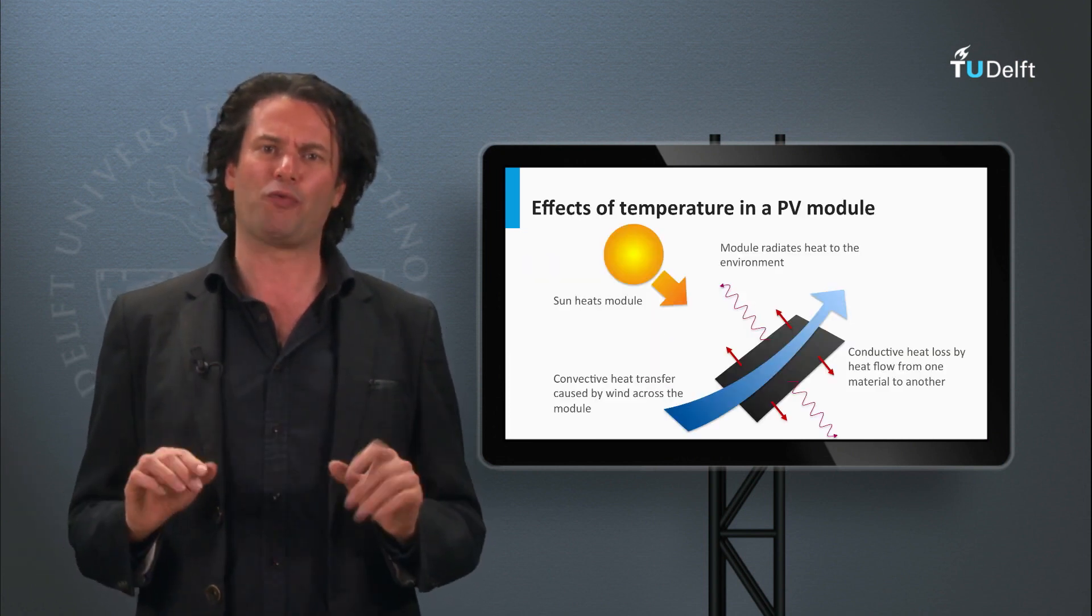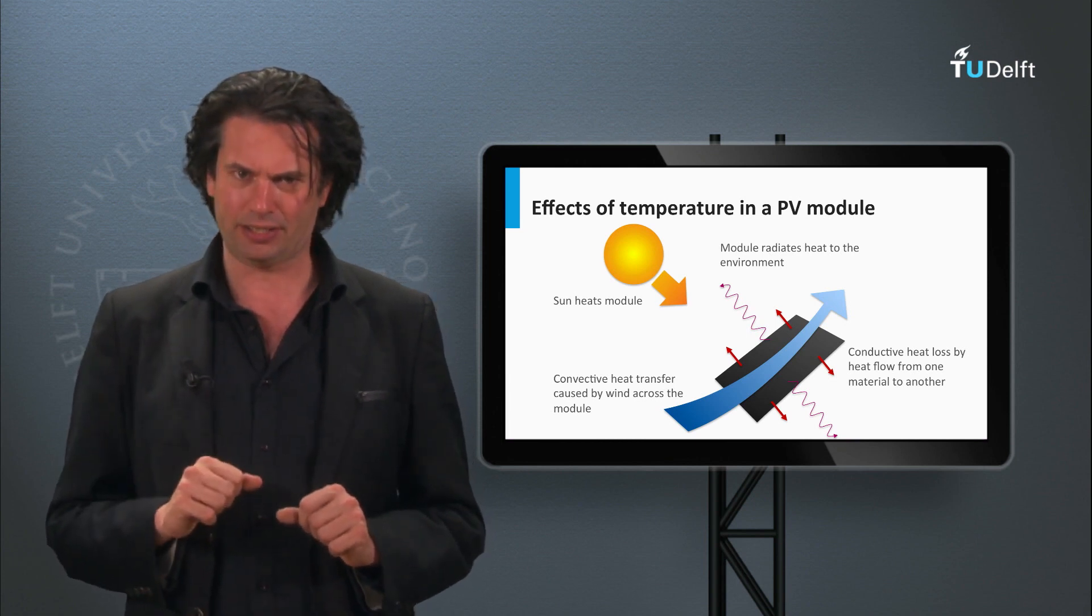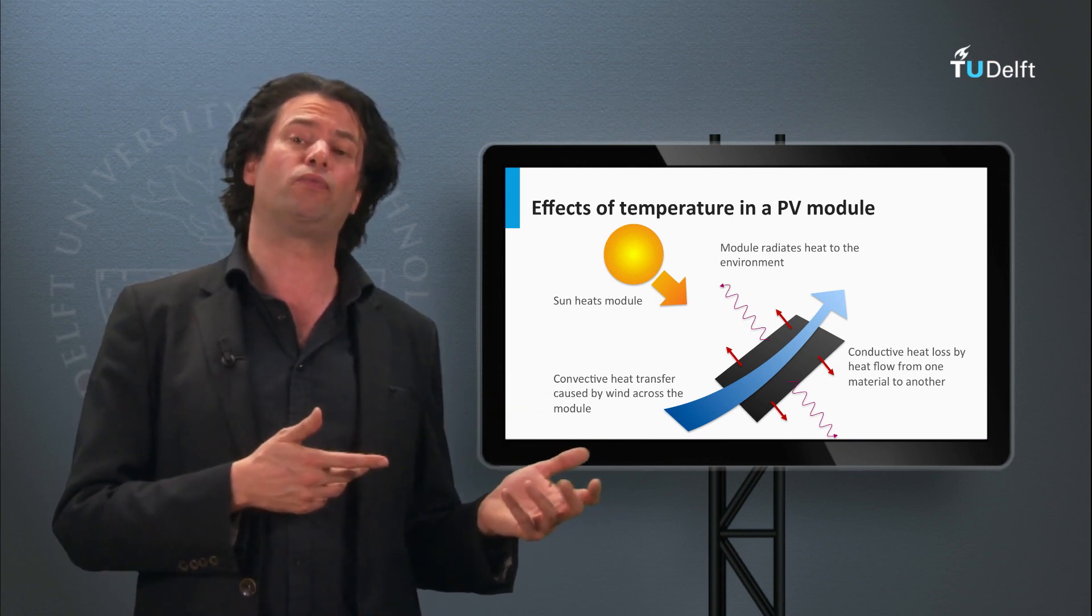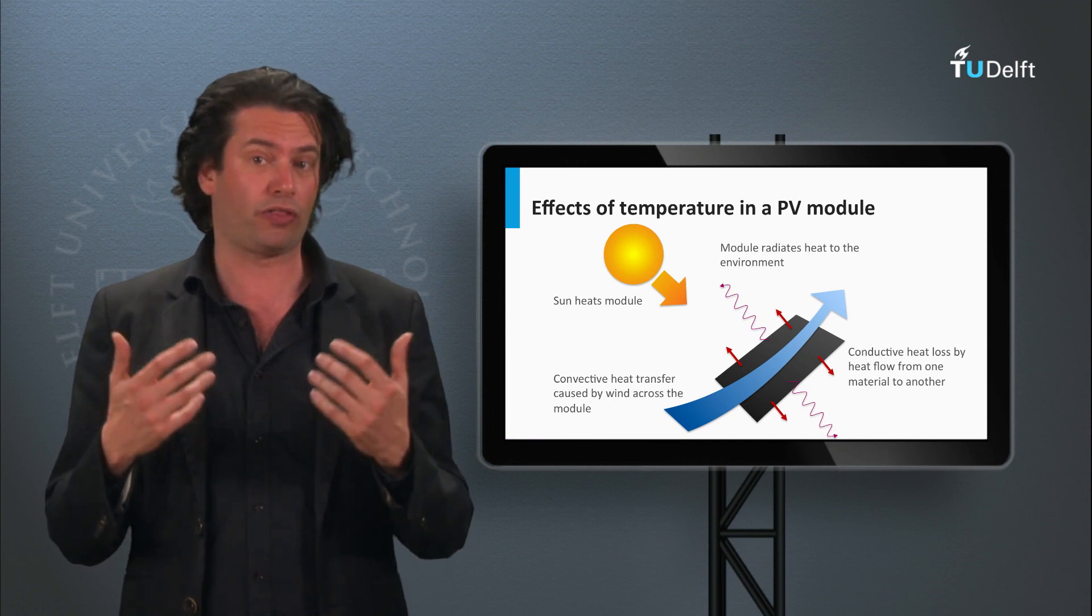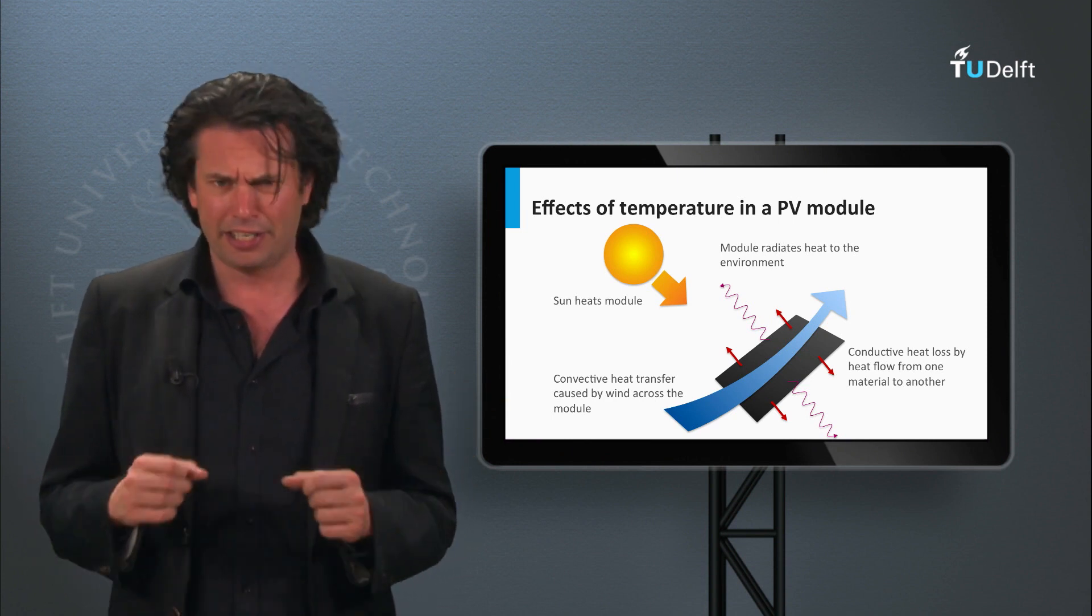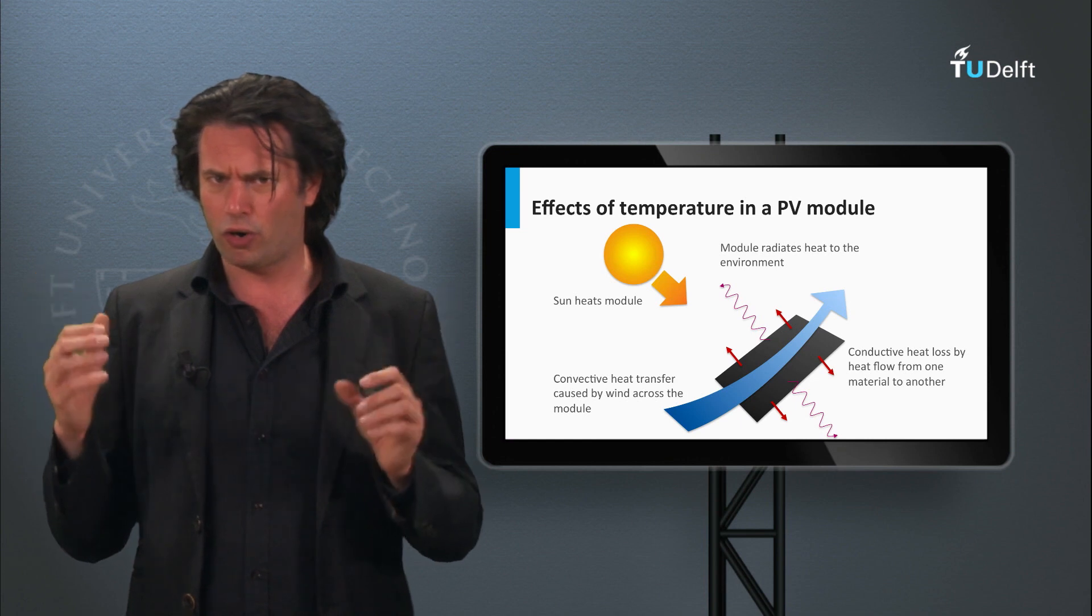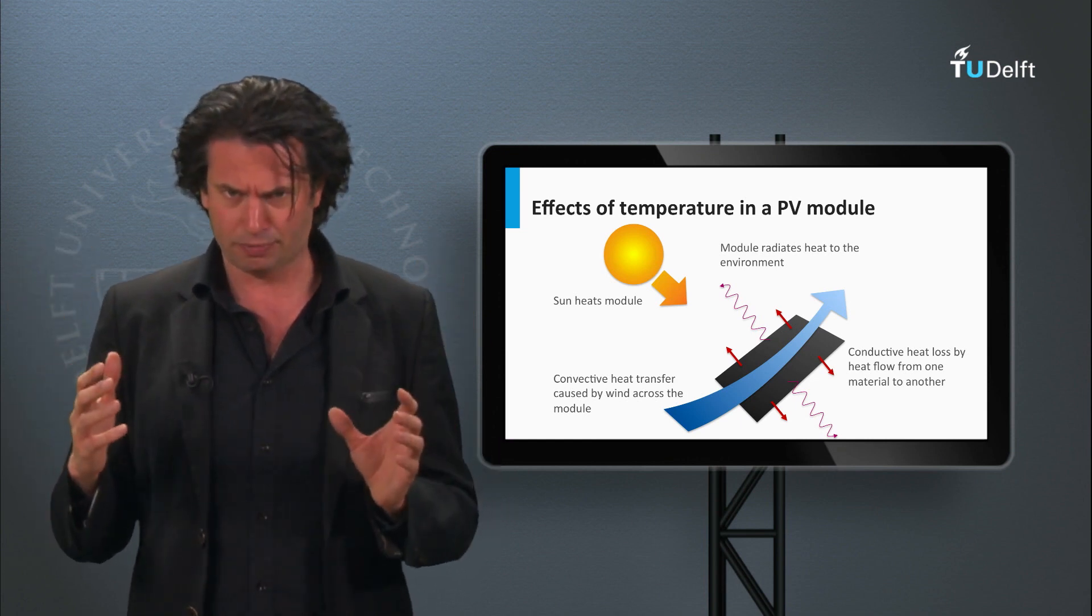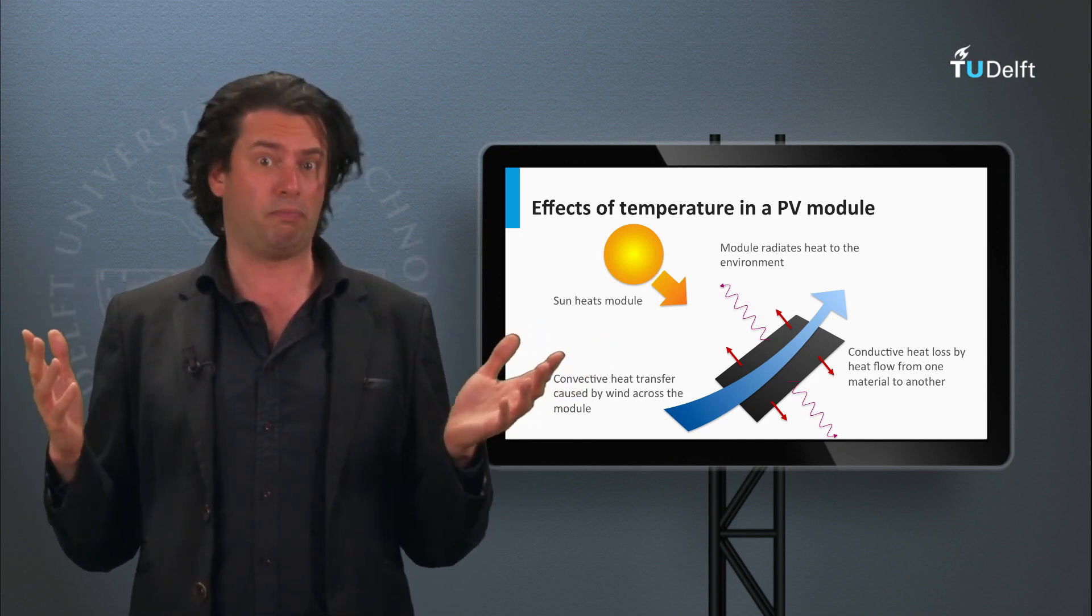Now we must be careful while making these calculations. In the previous example, when we said that the temperature was 30 degrees Celsius, did we mean the PV module's temperature or the ambient temperature? Should the two be the same?